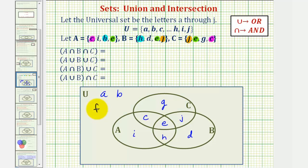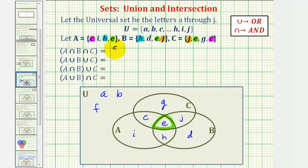Now let's determine the elements in each of these sets. Just for review, union is given by this symbol here, which means 'or.' Intersection is given using this symbol here, which means 'and.' So for A intersect B intersect C, we're looking for the elements that are in A and in B and in C — that's where we started our Venn diagram in the middle. Therefore A intersect B intersect C contains the element E.